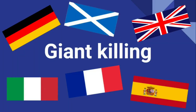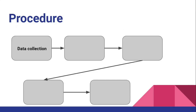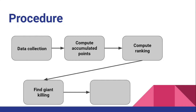Hello everyone, welcome to my YouTube channel. Today I'm going to show you how to find a giant killing game from six different leagues. The goal of this video is to find a giant killing game, defined by a lower ranked team unexpectedly winning against a higher ranked team, and create a table of the game. The steps are: collect data, compute accumulated points, compute rankings, find a giant killing game, and finally create a game table using MATLAB.